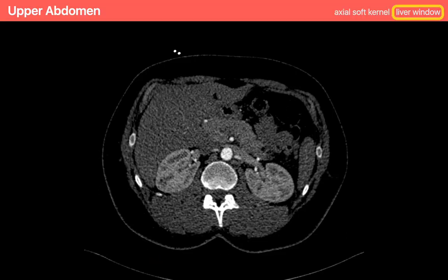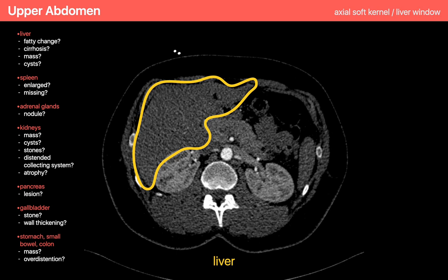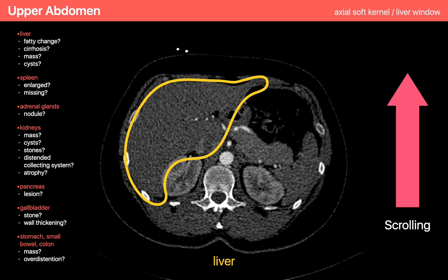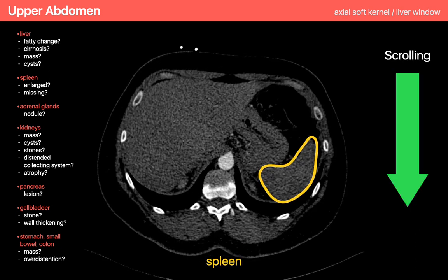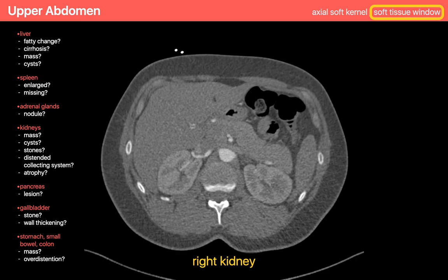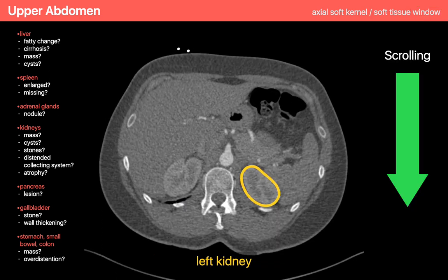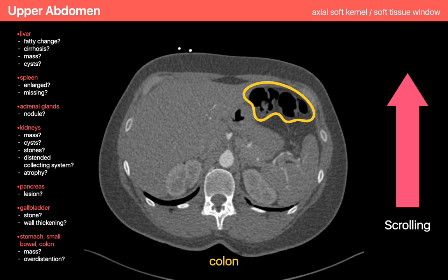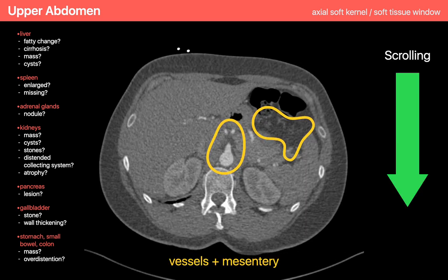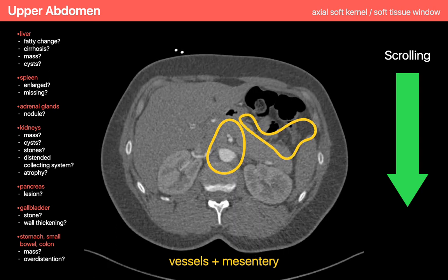Now I review the upper abdomen, beginning with a liver window and inspecting the liver for steatosis. I'm looking for liver parenchymal attenuation at least 10 Hounsfield units less than the spleen, or an absolute attenuation value under 40 Hounsfield units. I'm paying attention for nodular liver contours indicative of cirrhosis, or any cysts or masses in the liver. I look to see if the spleen is enlarged or missing, or if there are any abnormal lesions within it. Then I jump to a normal soft tissue window to review the kidneys, adrenal glands, pancreas, stomach, colon, mesenteric fat, and whatever vascular structures I can make out on these limited images of the upper abdomen.